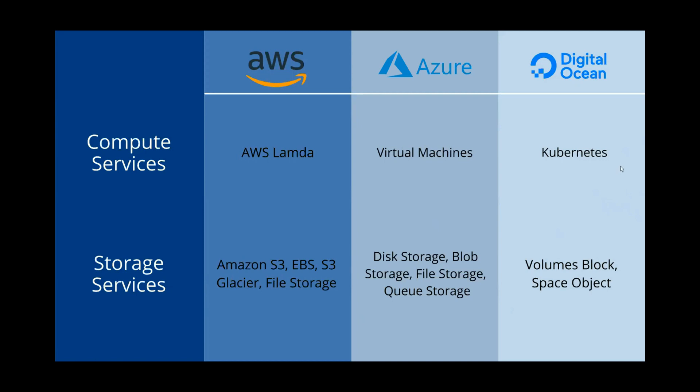For storage-related services: AWS uses simple storage service (S3), elastic block storage, elastic file storage, and storage gateway file storage. Azure uses block storage, queue storage, file storage, and data lake storage. DigitalOcean uses block storage and object storage.